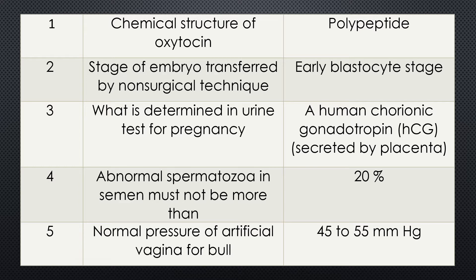Question 4. Abnormal spermatozoa in semen must not be more than 20% in semen. Question 5. Normal pressure of artificial vagina for bulls. Answer: the normal pressure should be 45 to 55 mm mercury in the artificial vagina for bulls. Almost all questions are important in this section.